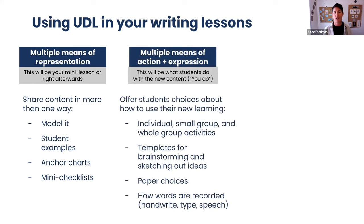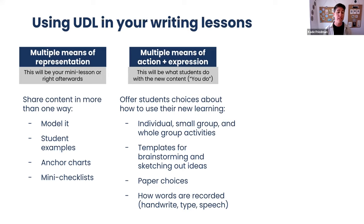The next principle is multiple means of action and expression. This is the 'you do' part of a lesson. When we think of the workshop model, it's offering students choice about how to use their new learning. The first choice is whether kids want to work alone or in a small group. Do they want to sit at the table with the rest of the class? That's a really important choice to frame for kids as: what would help you write best — not what would make you happy socially, but what would help you be focused and writing. We can also offer different kinds of templates for brainstorming and sketching out ideas — different kinds of graphic organizers — giving students choice, saying pick one, you don't have to use them. Not having it be teacher-directed but presented to the class so kids think about what's right for them.